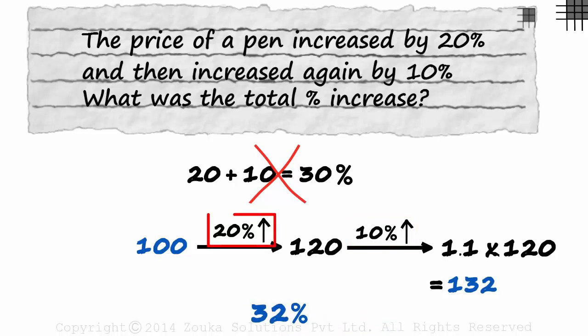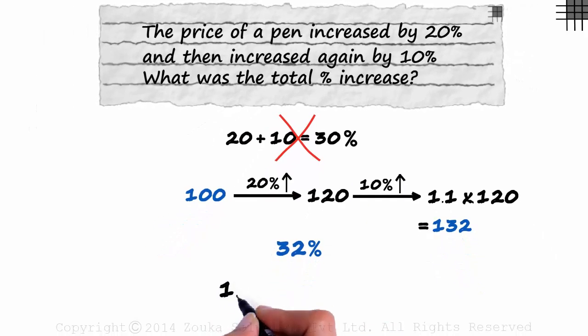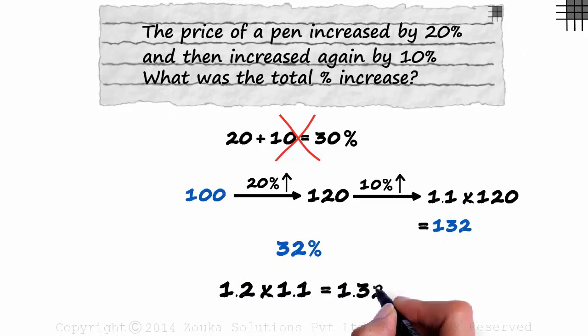That will be 132. So a 20% increase and then a 10% increase will result in a 32% increase. An increase of 20% and then 10% can be written as 1.2 times 1.1, and that gives us 1.32. This should tell you that it is a 32% increase.